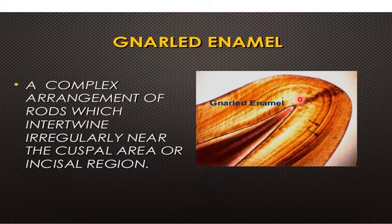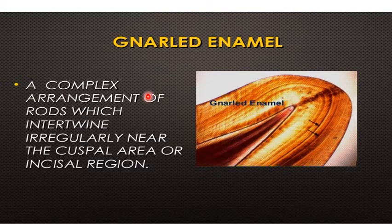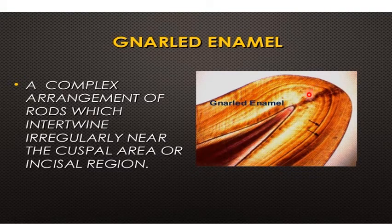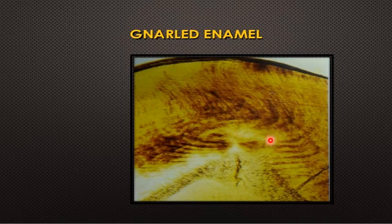Another histological feature in the enamel is called gnarled enamel. Gnarled enamel is present at the cusp tip and involves a complex arrangement of rods which intertwine irregularly near the cusp area or incisor region. This is due to the enamel rods twisting around each other in the cusp area. This type of enamel is present only at the cusp or incisor edge and is the strongest type of enamel because it withstands the forces of mastication at the incisal edge or cusp tip.